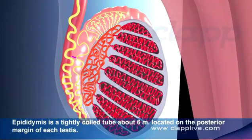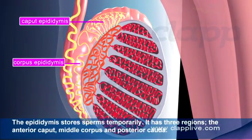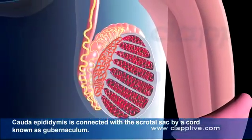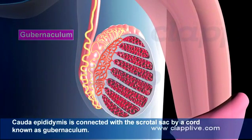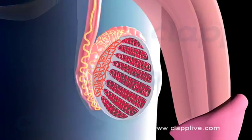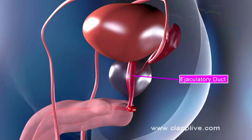The epididymis is a tightly coiled tube, about 6 meters long, located on the posterior margin of each testis. It stores sperm temporarily and has three regions: the anterior caput, the middle corpus, and the posterior cauda. The cauda epididymis is connected with the scrotal sac by a cord known as the gubernaculum. The epididymis leads to the vas deferens, which starts from the cauda epididymis, ascends to the abdomen through the inguinal canal, and passes over the urinary bladder. The vas deferens receives a duct from the seminal vesicle and forms a common duct called the ejaculatory duct, which finally opens at the urethra.